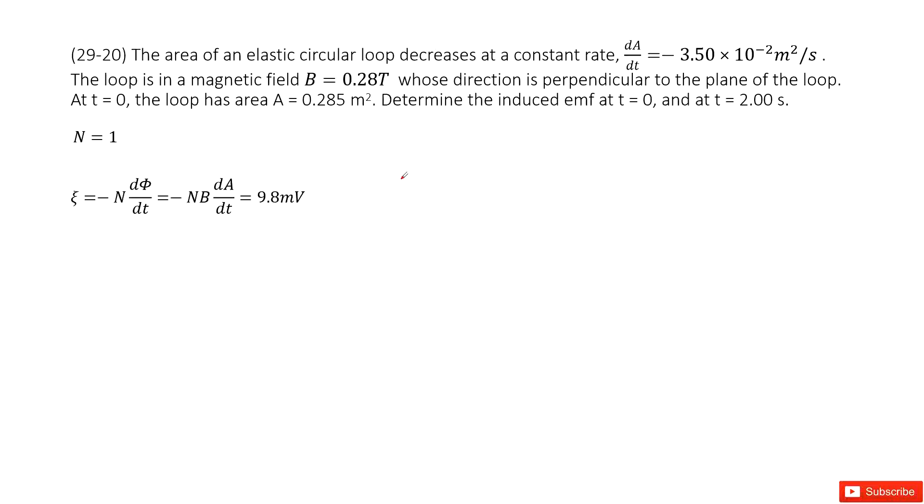So we look at a circular loop. For this circular loop, we know its cross-sectional area changes with time, given as dA/dt. A magnetic field B which is perpendicular to this loop is given, and then we determine the induced emf at different times.